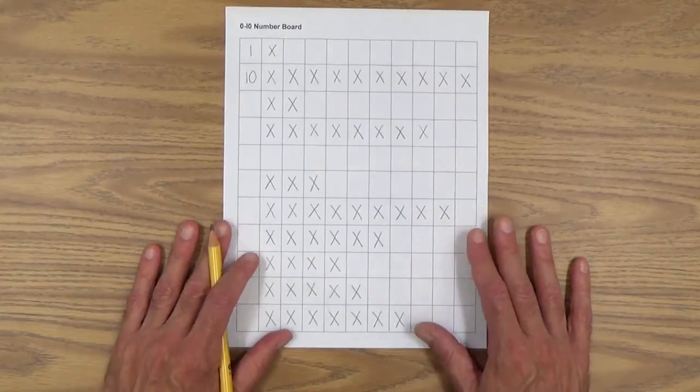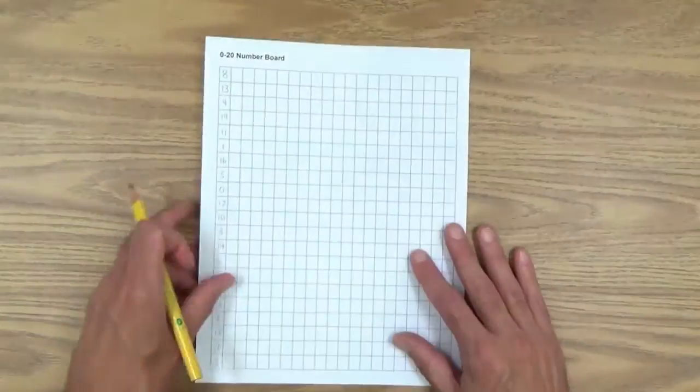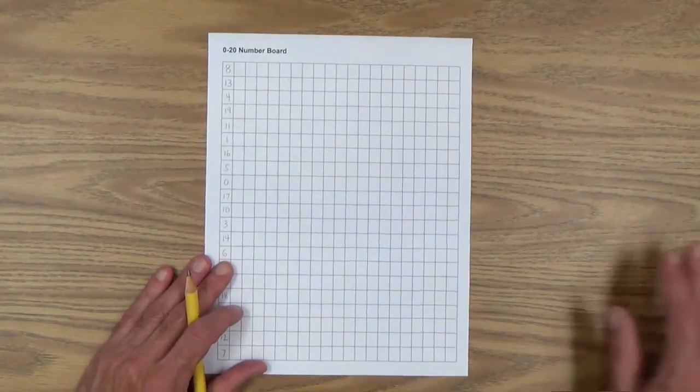Once your child has gotten good with the zero to 10 number board, then they can move on to the zero to 20 number board, obviously a bigger challenge.